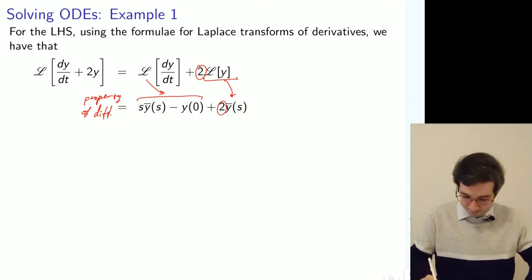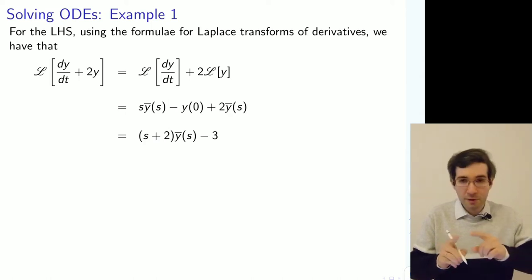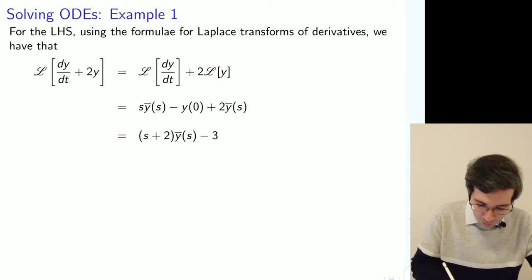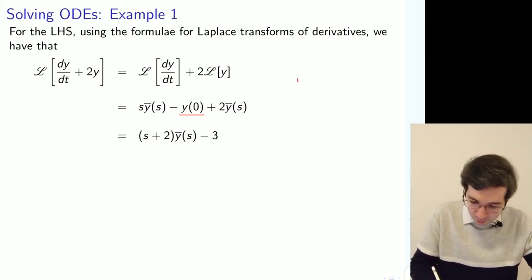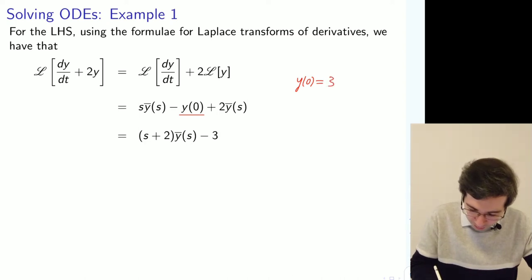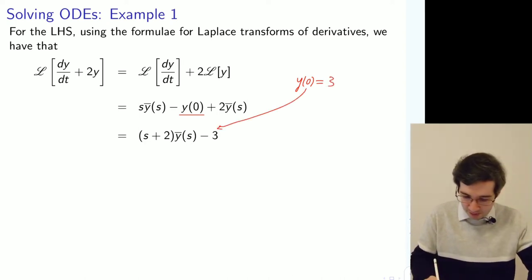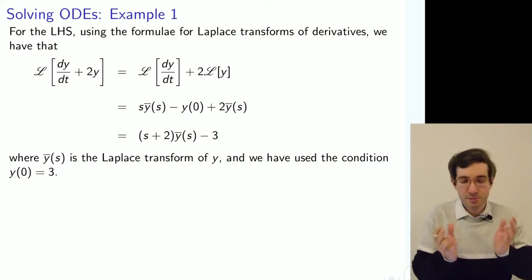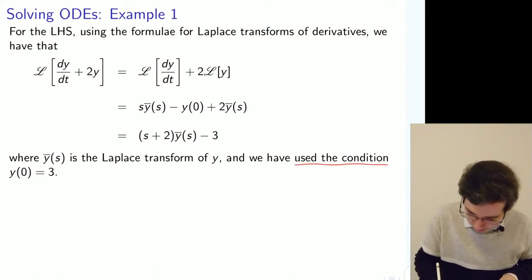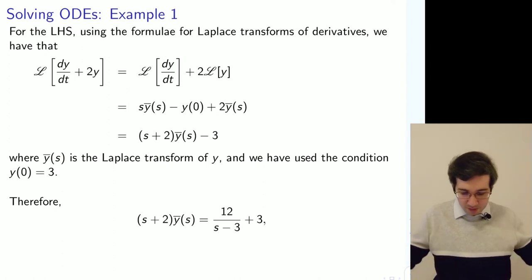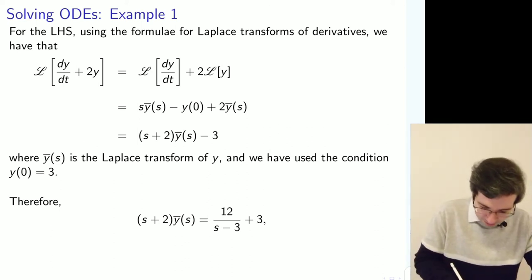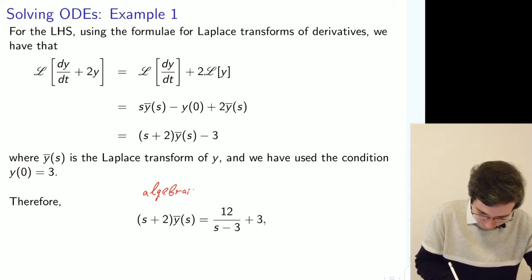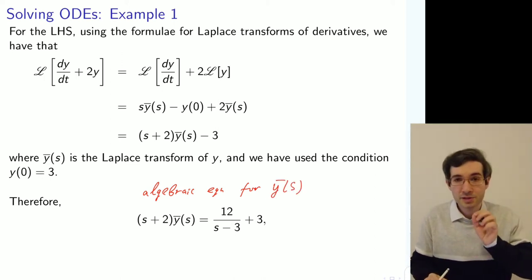Now putting it together, we need one more consideration: we need to know the initial value, because that's part of the first derivative property. We have been told that y at time zero is 3, so that determines this part. Writing everything together and simplifying using that condition, we arrive at the algebraic equation for the unknown function y-bar of s.